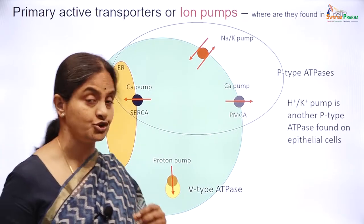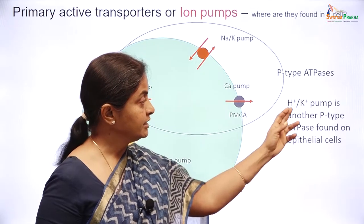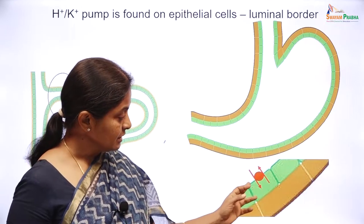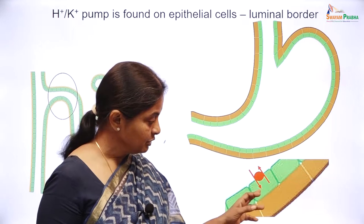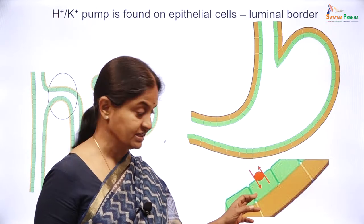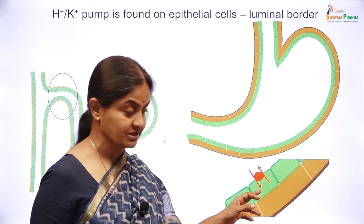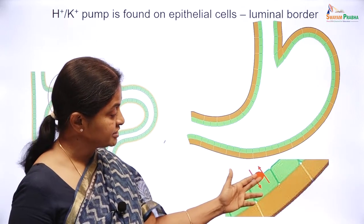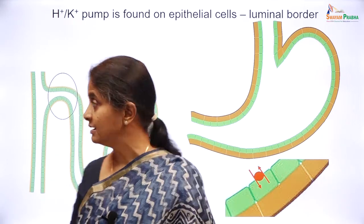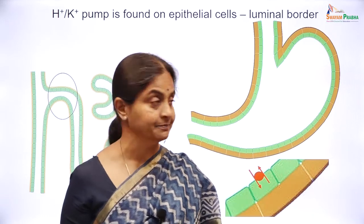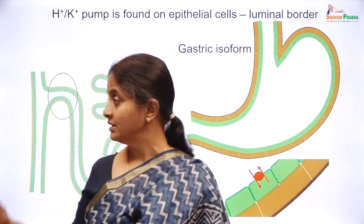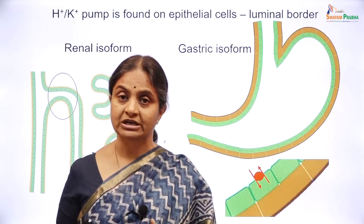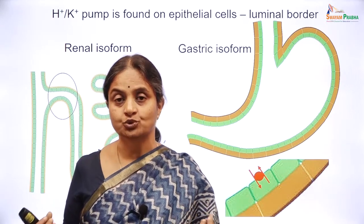One P-type ATPase not found on all cells is the hydrogen-potassium pump, found on epithelial cells — specifically on the luminal border. Since potassium concentration within a cell is higher than outside, this pump moves potassium actively into the cell while extruding hydrogen ions. The hydrogen-potassium pump is found on the luminal border of epithelial cells in the stomach and in the distal renal tubular epithelium — a gastric isoform and a renal isoform respectively, with different specificities for blockers.